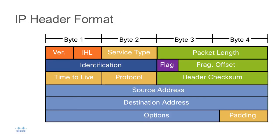Traffic passing down the protocol stack receives a header, and the header contains information relevant to that layer, used for providing service to the layer above. It's important to understand the IP header format because attackers can manipulate those fields in an IP header and use that as an attack vector. So as an analyst, you certainly want to be familiar with the different fields inside of an IP header. In this graphic, we see an IP header with a number of different fields, and we'll go through each of these fields explaining what they do.